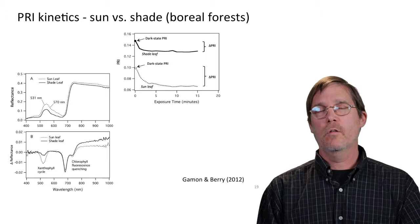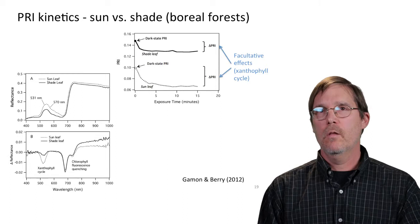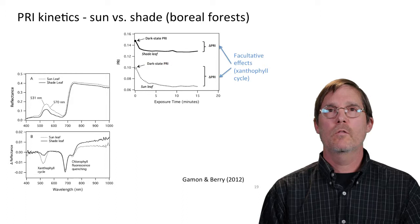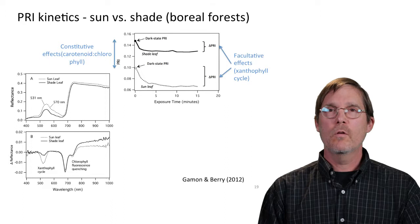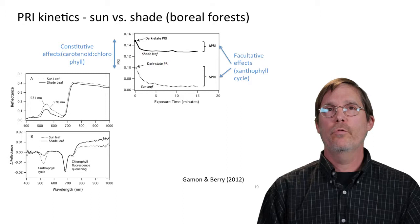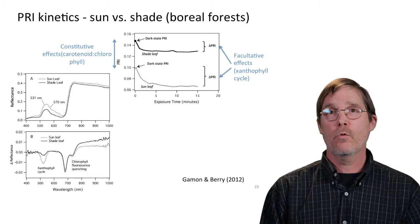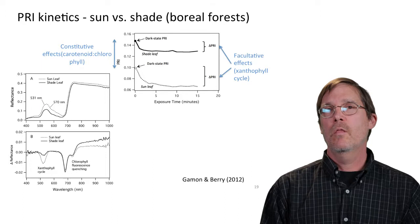The dynamic part is the xanthophyll cycle operating — a facultative effect changing within the timescale of a day, from minute to minute as the light changes. We also notice a fundamental difference in the starting point between the shade leaf and the sun leaf, which is due to different levels of carotenoid pigments relative to chlorophyll — the so-called pool size effects. This constitutive effect changes very slowly, not within a day, but over the life of the leaf, with seasons, or with chronic stress.